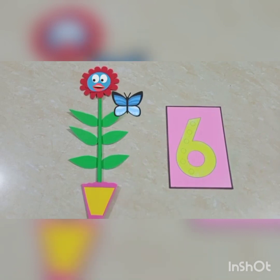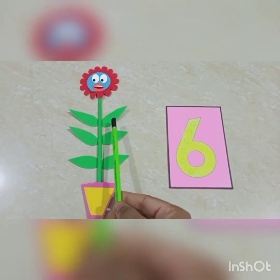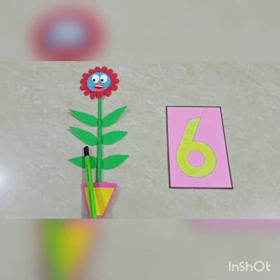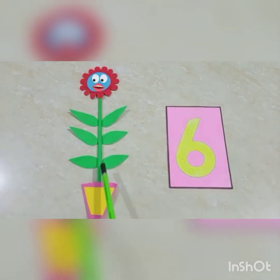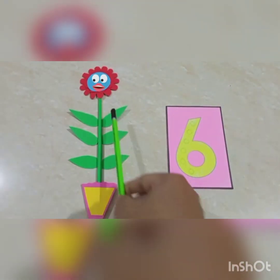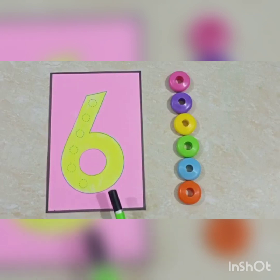So, children, let's count the leaves again. One, two, three, four, five, six. Six leaves. So, children, this is number six.